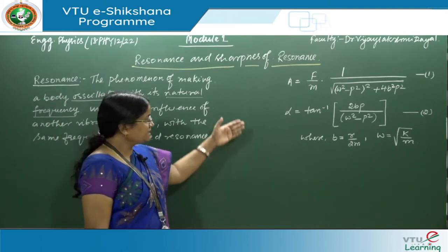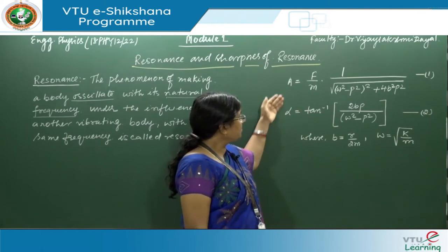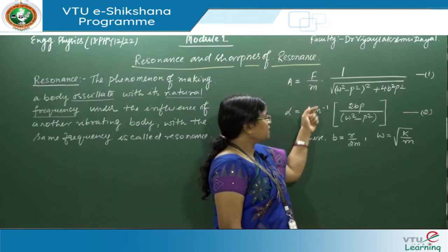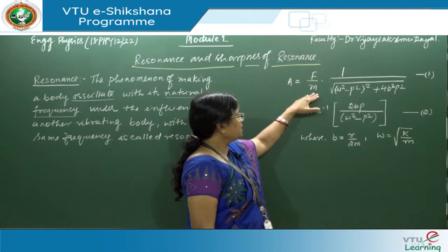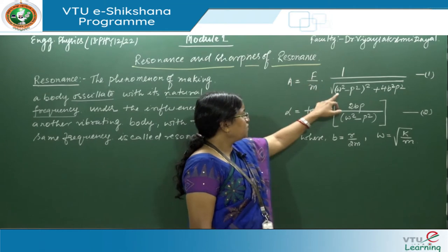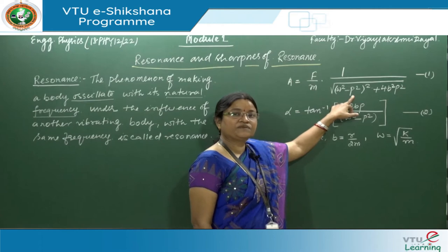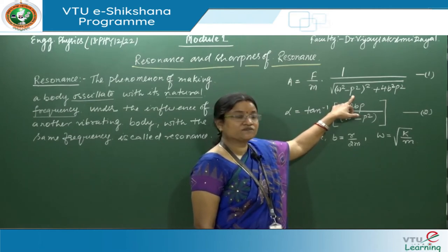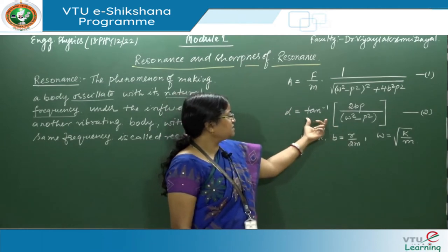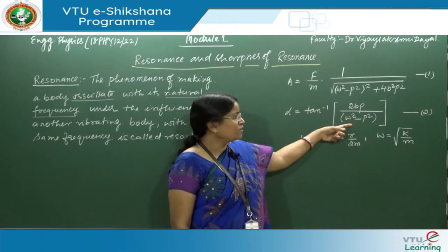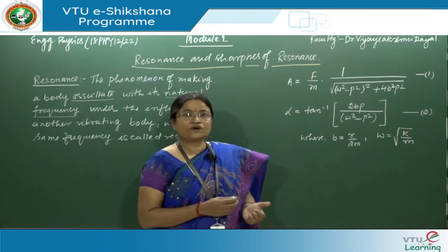We have already derived the relation for amplitude and phase in the case of forced oscillation. Amplitude is given by f divided by m, times 1 divided by the square root of (omega squared minus p squared) squared plus 4b squared p squared, where m is the mass, f is the applied force, omega is the natural angular frequency, p is the frequency of the external periodic force, and b is the damping coefficient. The phase relation alpha is tan inverse of 2bp divided by (omega squared minus p squared), where b equals r by 2m and omega equals square root of k by m.